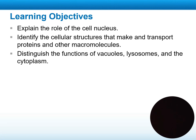Inside each one of these cells we have organelles, and these organelles are different. Some organelles can be found in both prokaryotic and eukaryotic cells, or in both animal and plant cells. Others can be found only in plant cells and not in animal cells, or vice versa — found in animal cells but not in plant cells.